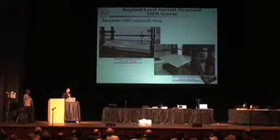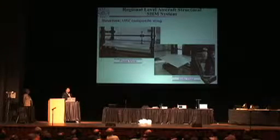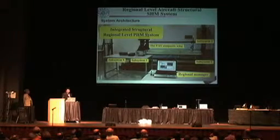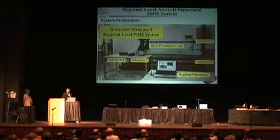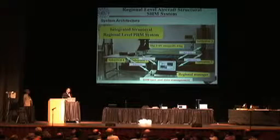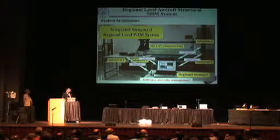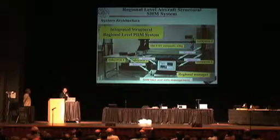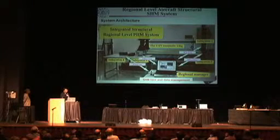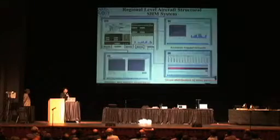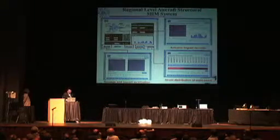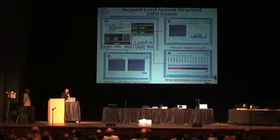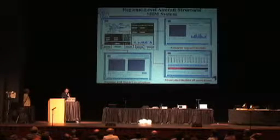I will show this demonstration system built on a UAV composite wing in our lab. This is the whole structure of the demonstration system. It consists of a regional manager and four subsystems. The regional manager is in charge of managing the whole system. Subsystems are used to monitor different targets, including impact, damage, and strain. They send monitoring information to the regional manager through different ways. The top is the regional manager software, which gives brief information about the health of the structure. The other three are the sub-system management software.